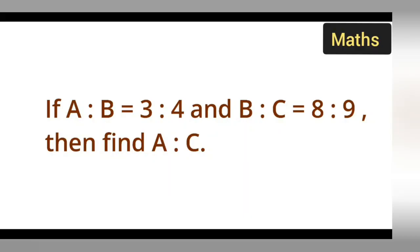Welcome to today's class of mathematics. Today's question is taken from class 7th mathematics from the ratio and proportion chapter. The question is: if A is to B is equal to 3 ratio 4, and B ratio C is equal to 8 ratio 9, then we need to find A ratio C.